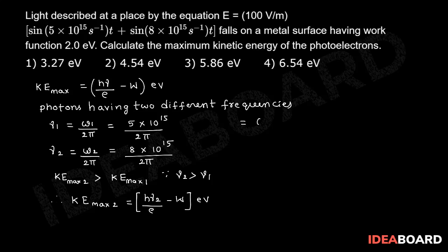Therefore, this is 6.6 into Planck's constant 10 power minus 34, nu 2 value 8 into 10 power 15 by this is 2 into 3.414 into charge 1.6 into 10 power minus 19 minus 2. So after solving, this becomes 5.27 minus 2 that equals 3.27 electron volt.